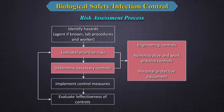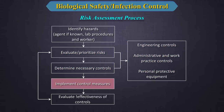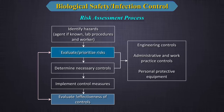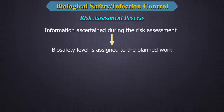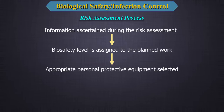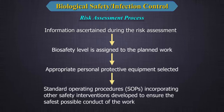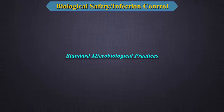Control implementation involves engineering controls, administrative and work practice controls, and personal protective equipment. Once controls are implemented, we evaluate their effectiveness, and findings feed back into the risk prioritization cycle. Based on the risk assessment, a biosafety level is assigned, appropriate PPE is selected, and standard operating procedures incorporating safety interventions are developed to ensure the safest possible conduct of work.